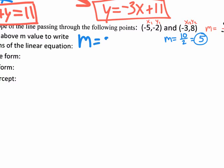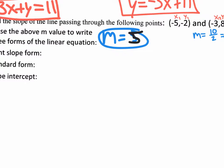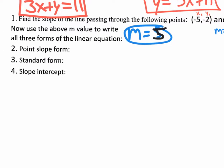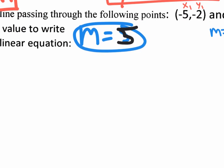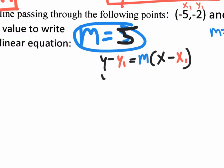The m value is 5 — you get one point for that. Now we go to point slope form, which is the easiest step since we already have the first point and the slope we just found. Plugging in: y minus y1, which is negative 2, equals m, which is 5, times (x minus x1, which is negative 5).